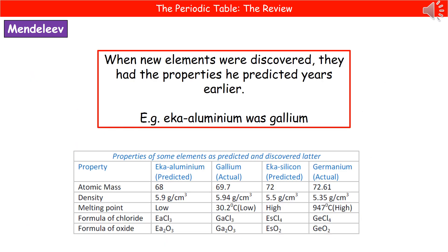What we actually found was that when new elements were then discovered, they did have the properties that Mendeleev had predicted years earlier. His eka-aluminium turned out to be what we know today as gallium. At the bottom there, there's a table of some of his predicted elements and their properties, and then what they actually turned out to be.